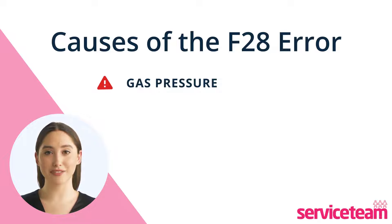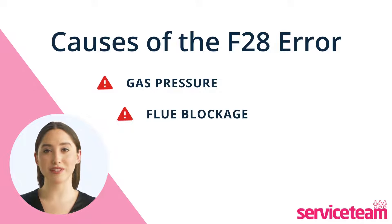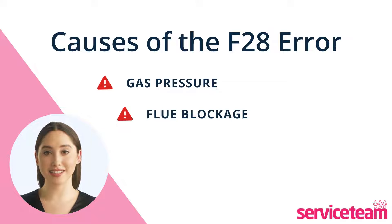An F28 fault can occur due to a blockage in the flue, where exhaust gases are released, or in the condensate pipe. These blockages can result from wear and tear over time, so it's best to consult a boiler professional for a comprehensive repair.